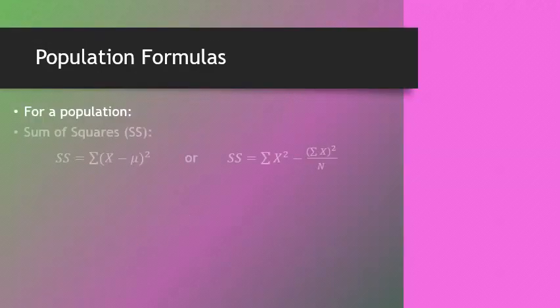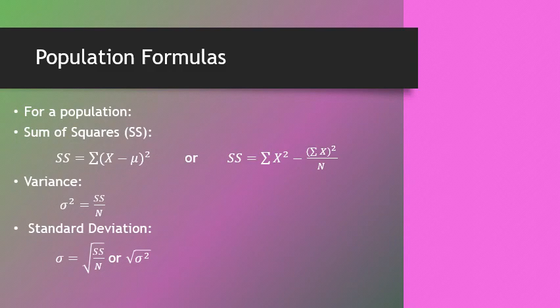So let's look at some other population formulas. We know sum of squares — we can either use the definitional formula or the computational formula, which is the one I typically prefer. The variance is equal to the sum of squares divided by n, and rho squared is just the symbol for variance — you don't square anything, you just write rho squared equals the variance, which equals sum of squares over n. Then the standard deviation — rho — is equal to the square root of the variance. If you don't know the variance, the other formula is just the square root of SS over n. Either way you want to write it is fine.